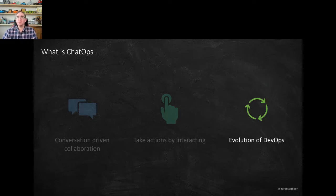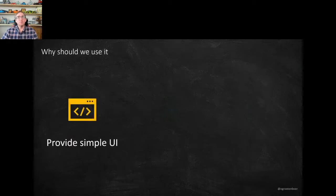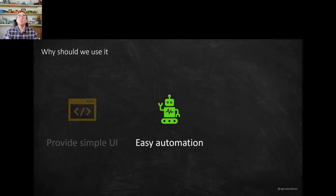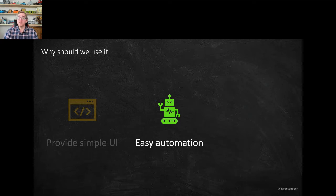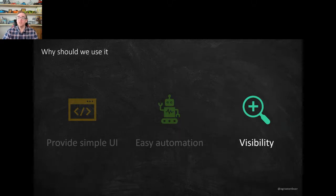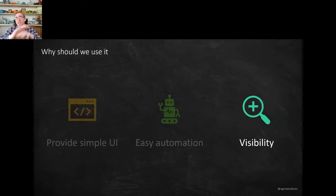Why should we use ChatOps? First, it provides a much simpler UI — no matter who the user is, they go to the same experience, in our case Teams, and just chat to the bot. It automates away all the work — if I say 'create a resource' I don't have to know naming conventions or best practices, I just say it and it's done. It also provides visibility into what's happening in the environment, so we can all see what resources and tasks are being created.